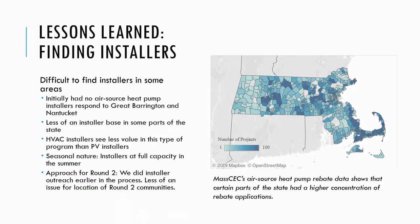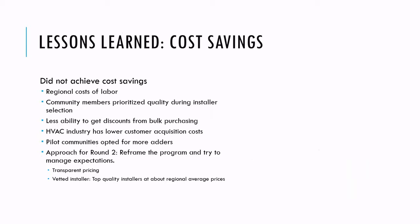Finding installers was very difficult in some communities — particularly Great Barrington in far western Massachusetts and Nantucket Island. The HVAC industry is a pretty local industry for most businesses. This program was a less attractive proposition to HVAC installers than PV installers: in summer when they're already at full capacity, they're not interested in bringing in more leads. In round two, we did more outreach to installers, but we also just got lucky that the communities had a stronger installer base.